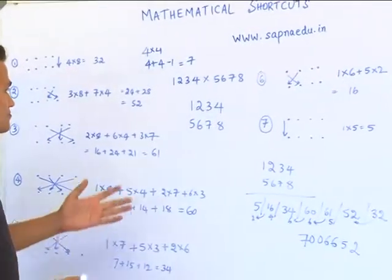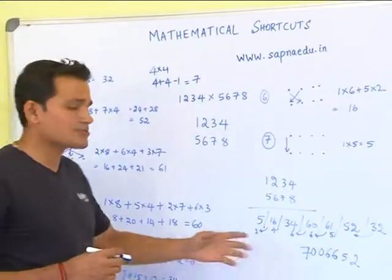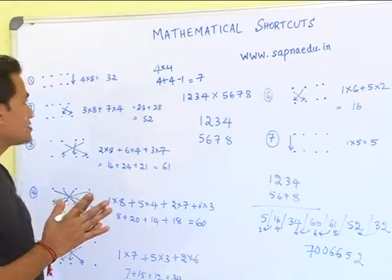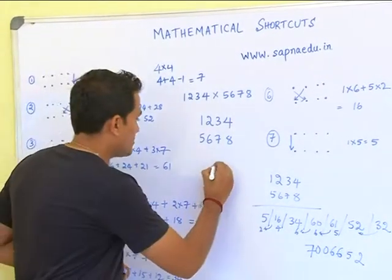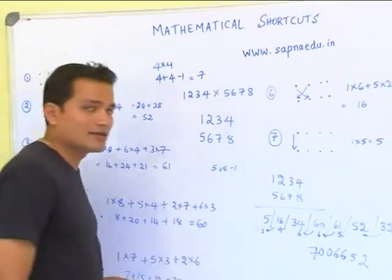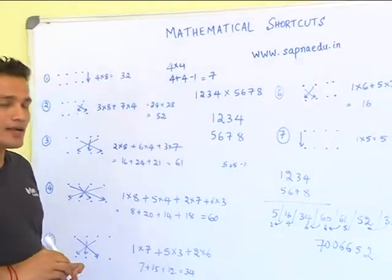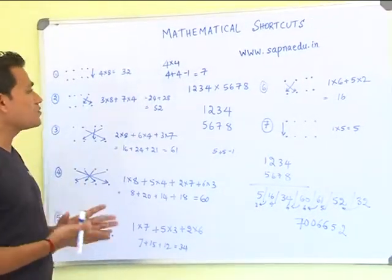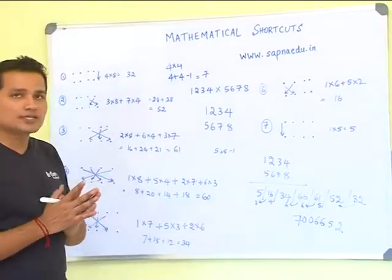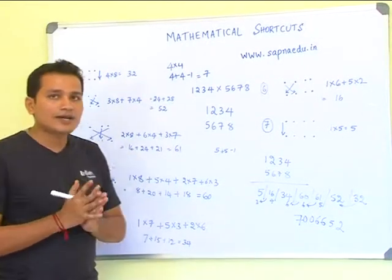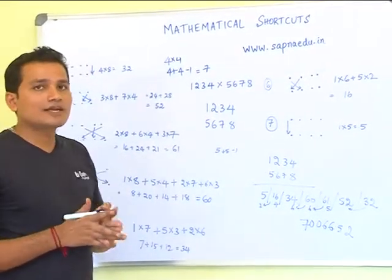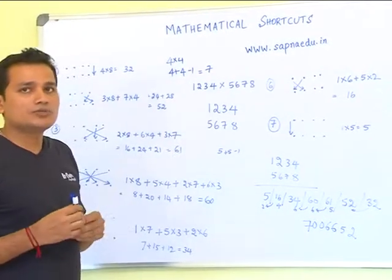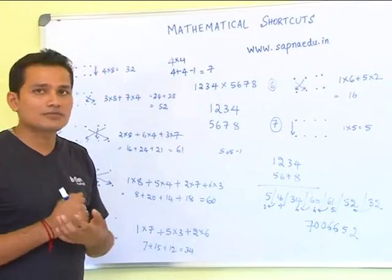As the number of digits increases, the number of steps also increases. So similarly, a five cross five multiplication would have five plus five minus one, nine steps. I hope you find this technique easier. If you have any doubts regarding this tutorial or shortcut, you can leave a comment. If you want to learn more about mathematical shortcuts, you can go to my website www.sapnaedu.in. Thank you.